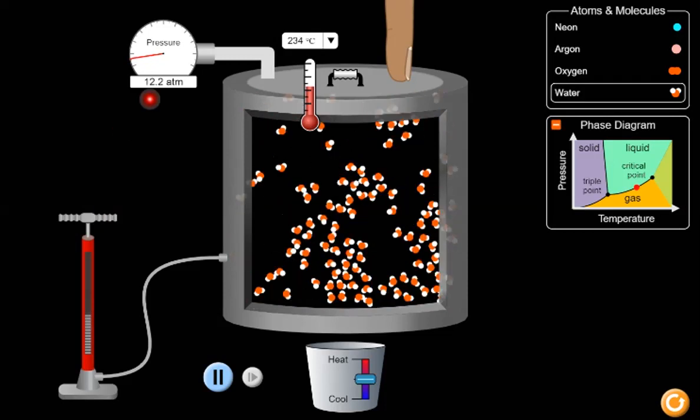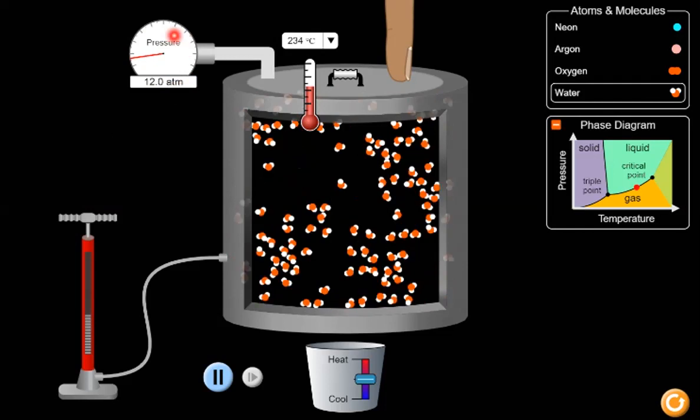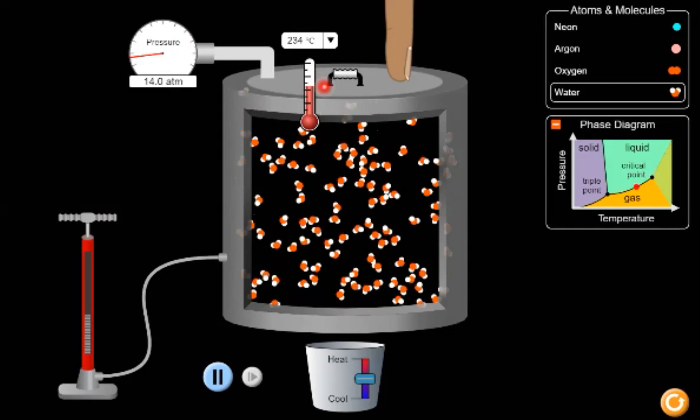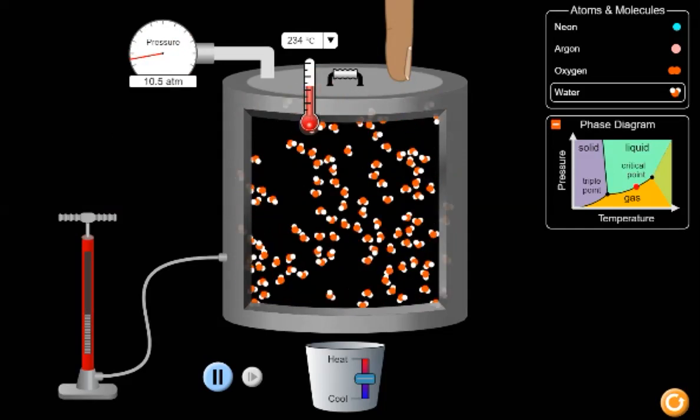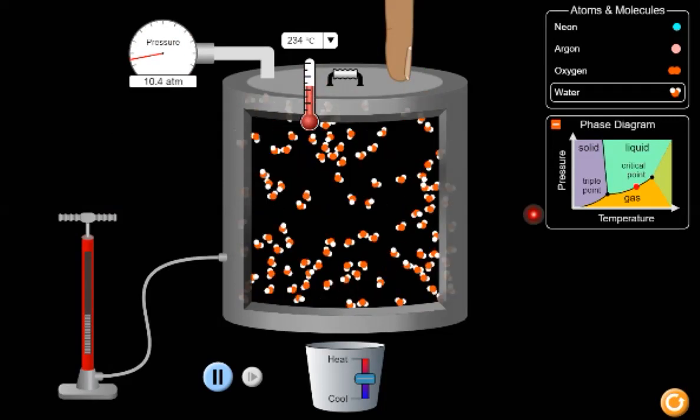Please notice that there is a pressure gauge in the upper left-hand corner, telling you exactly how much pressure is inside the container, and there's a thermometer showing the reading of the temperature on this particular scale.